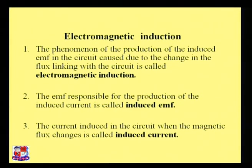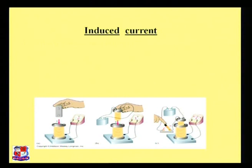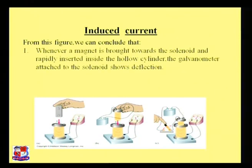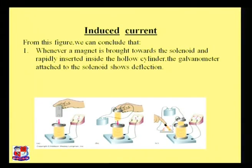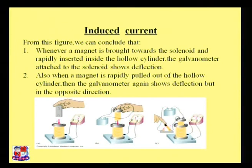The current induced in the circuit when the magnetic flux changes is called induced current. For example, whenever a magnet is brought towards a solenoid and rapidly inserted inside the hollow cylinder, the galvanometer attached to the solenoid shows deflection, meaning current is induced in the circuit. When the magnet is pulled out, the galvanometer again shows deflection, but this time in the opposite direction.